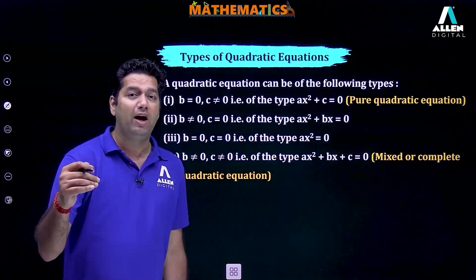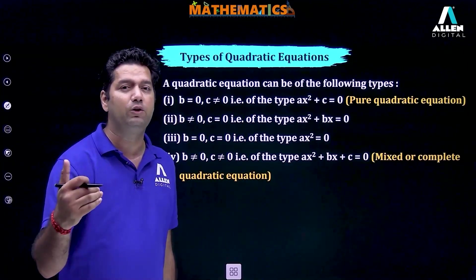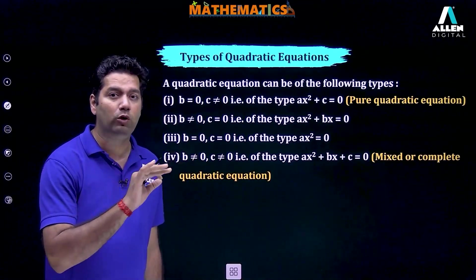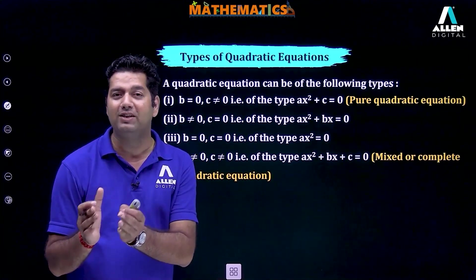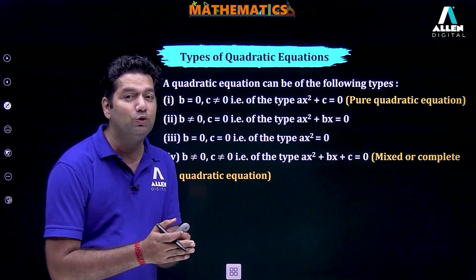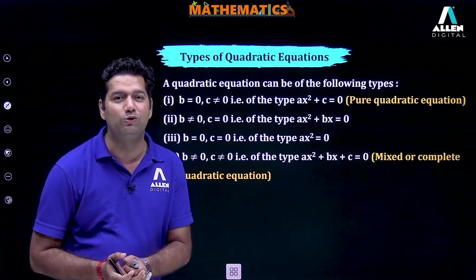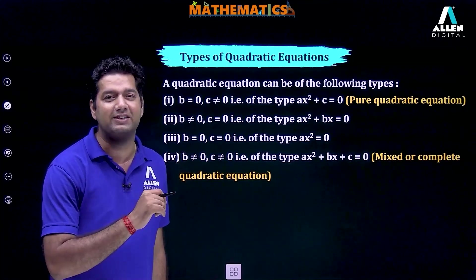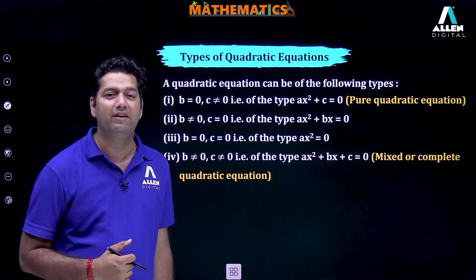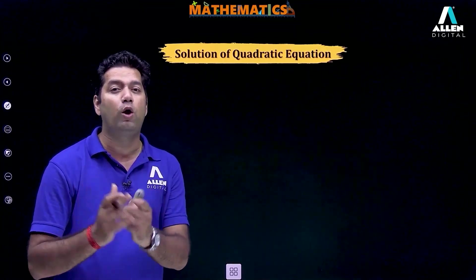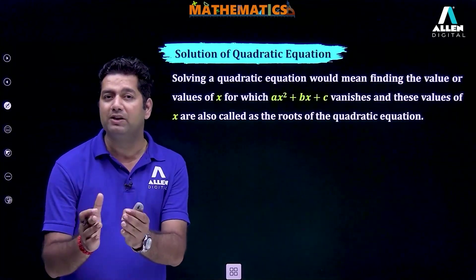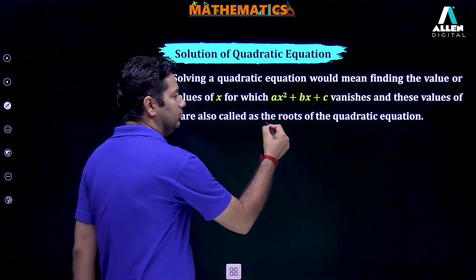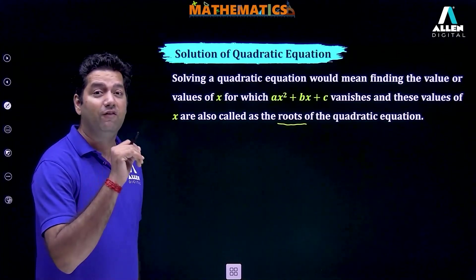Now, types of quadratic equations. We have different types of quadratic equations. If b is equal to 0, then we get the quadratic equation as ax square plus c is equal to 0. This is known as a pure or complete quadratic equation. Moving to the solution of quadratic equation: those values of x at which ax square plus bx plus c vanishes or becomes equal to 0 are known as the roots of the quadratic equation, and these are the solutions.